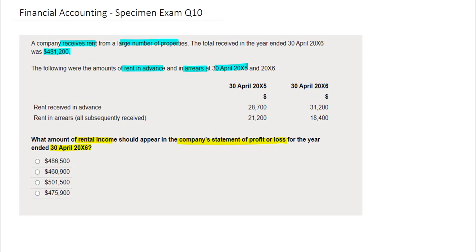Be aware that the rent received in advance is often referred to as deferred income. This is simply amounts that have been received for a particular year but actually relate to the following year, hence they need to be deferred. Rent in arrears is often referred to as accrued income. This is income that is outstanding at the end of a particular year.